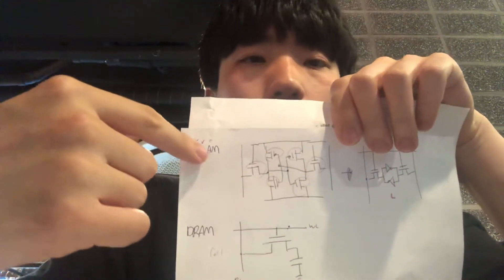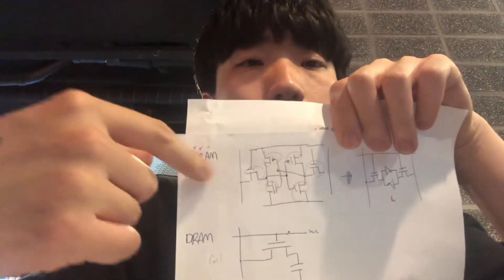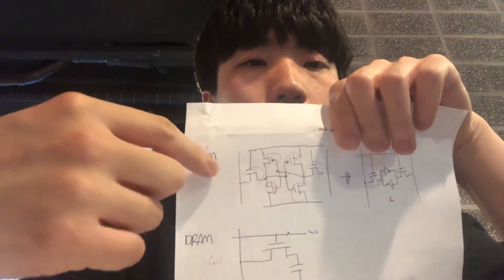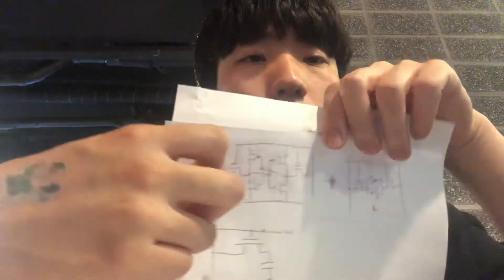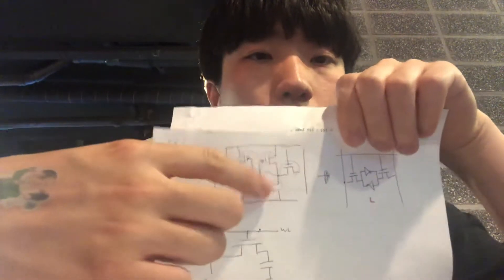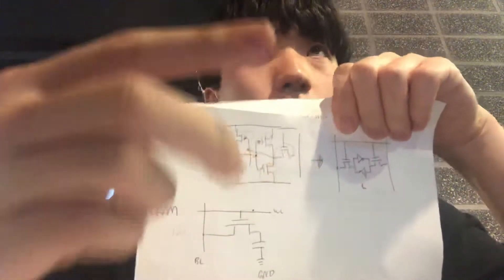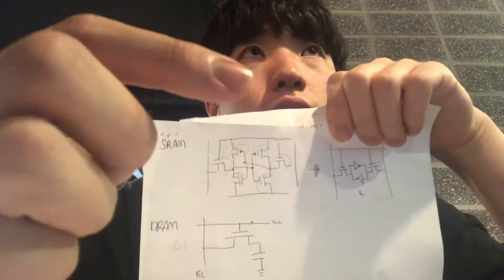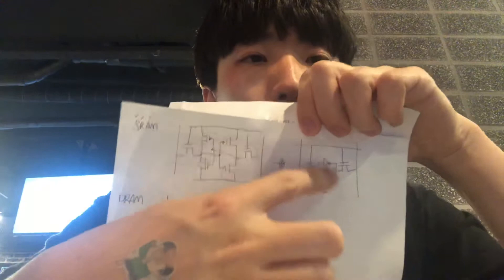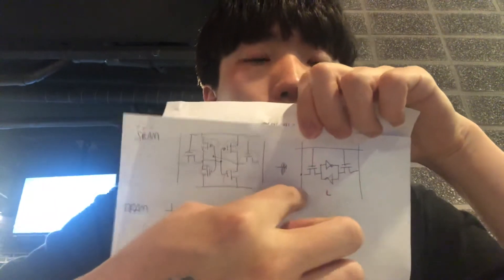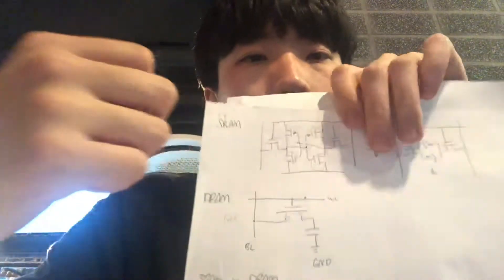Static random access memory, so we call it SRAM. It's composed of six transistors. Those transistors form two inverters, and the side transistors are used as switches.